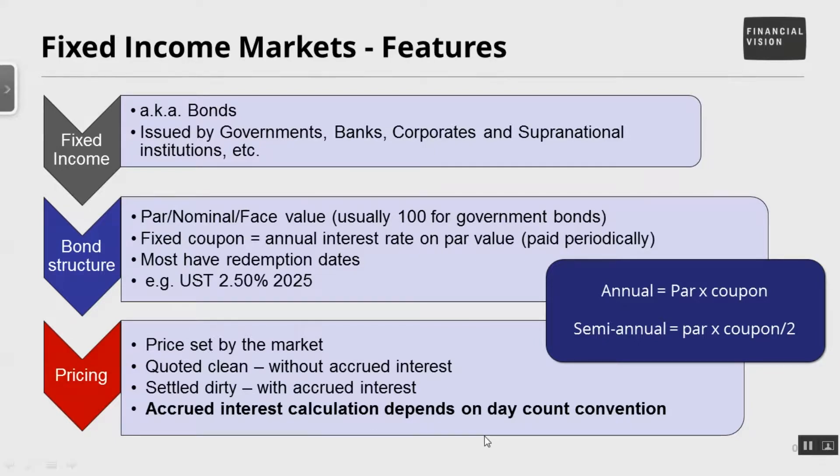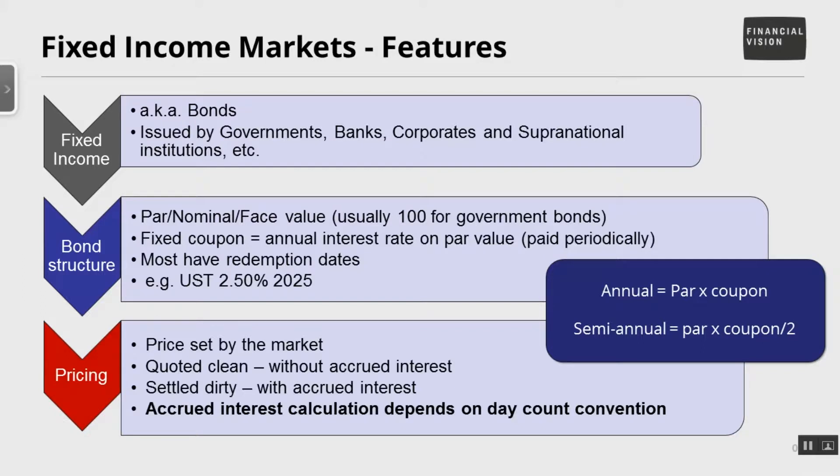We'll now concentrate on the bottom part of the screen. Remember that once a bond is issued it is freely tradable in the secondary market, and the price is set by buyers and sellers interacting. You may have heard that bonds are quoted clean and settled dirty. The clean price is the price without any accrued interest, and the dirty price is the amount you actually pay when you settle, which is the clean price plus the accrued interest. So we need to look at how we calculate the accrued interest to work out the settlement price.